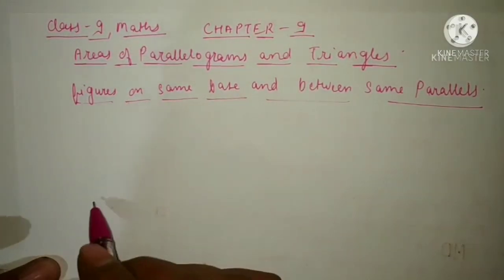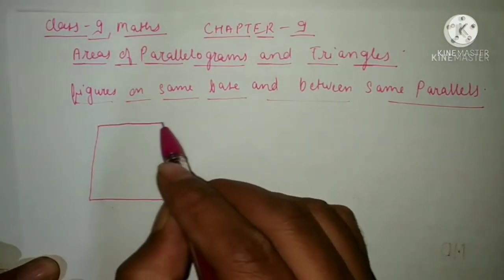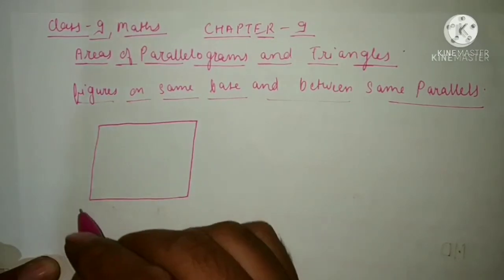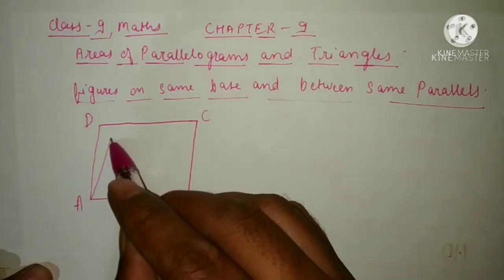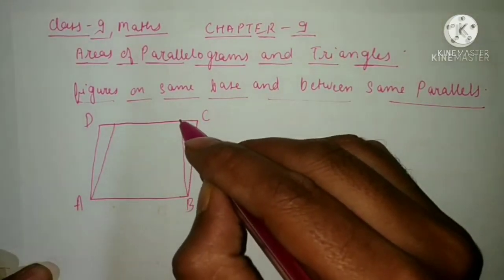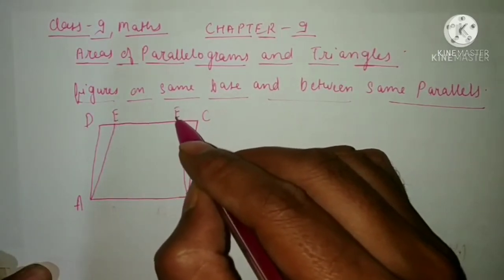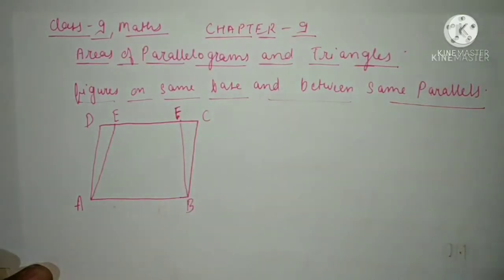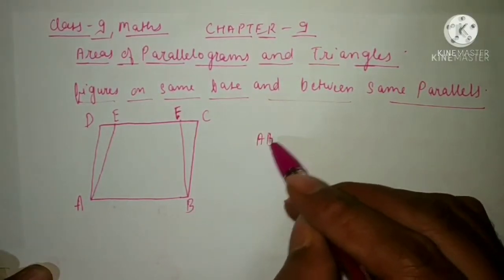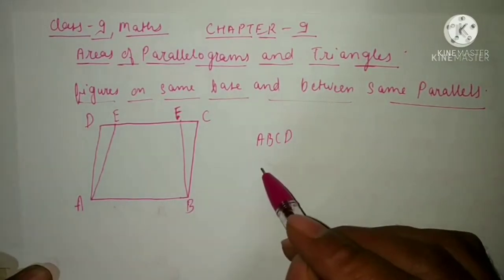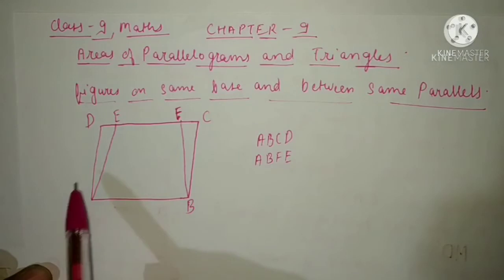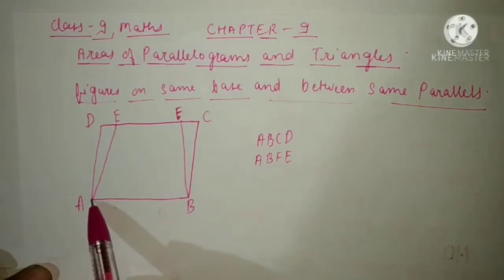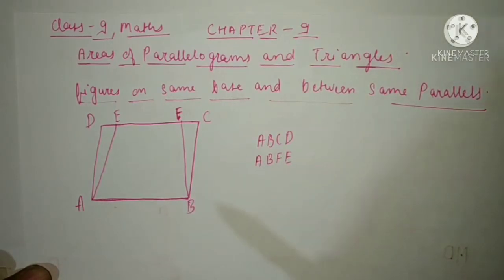Suppose this is a figure A, B, C, and D, where AB is parallel to CD. Now suppose one more figure is drawn — this is E and this is F. One quadrilateral is ABCD and the other quadrilateral is ABFE. These are the two quadrilaterals.